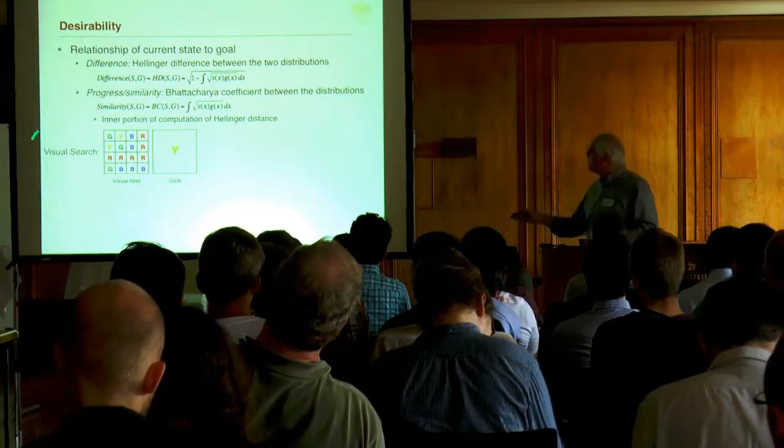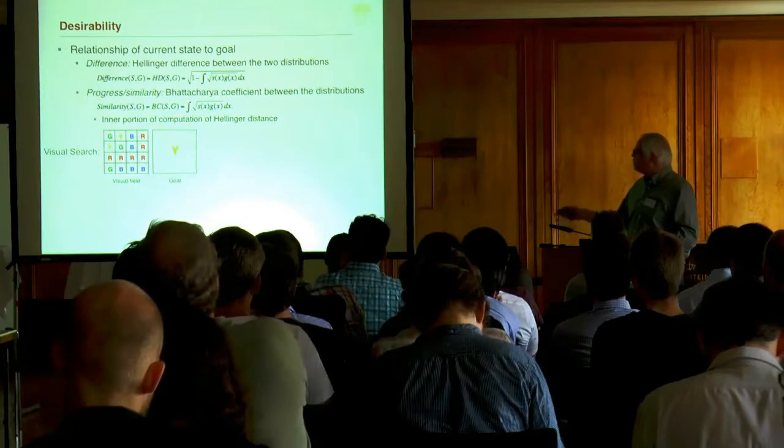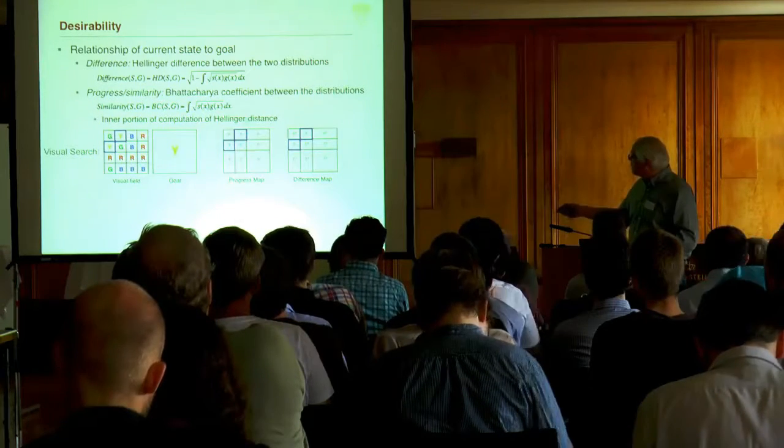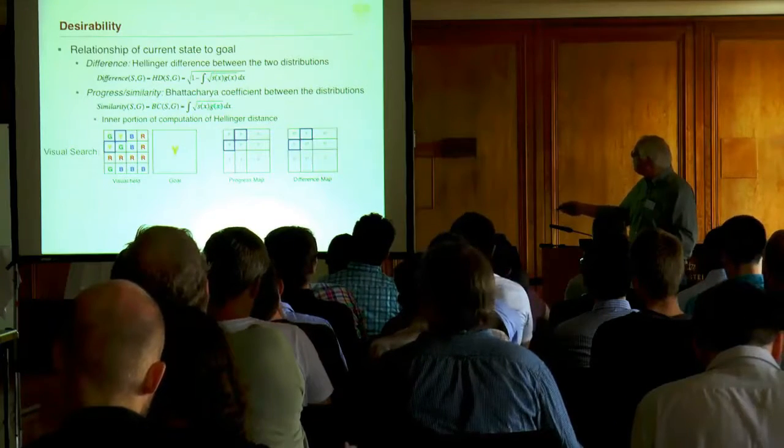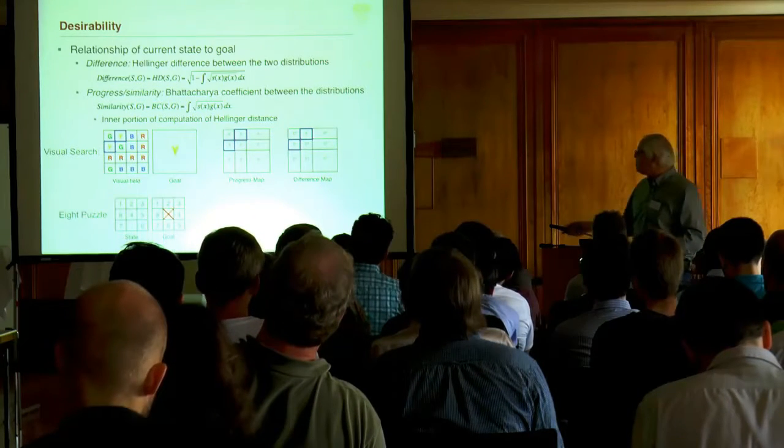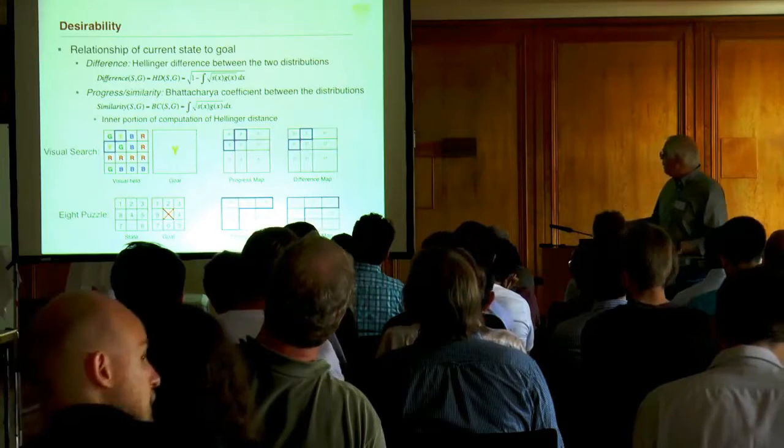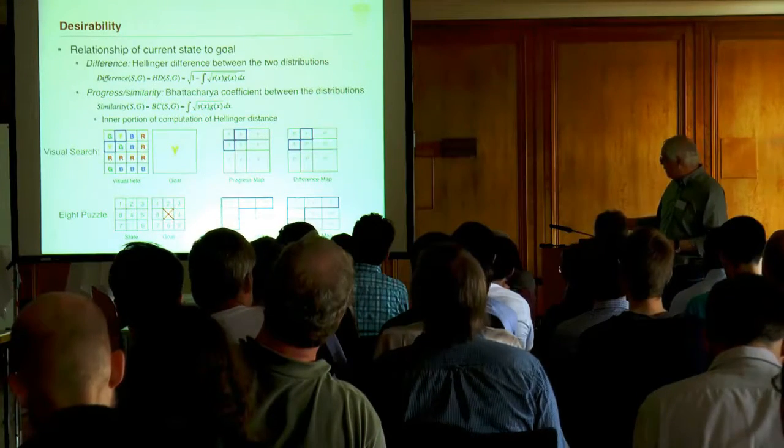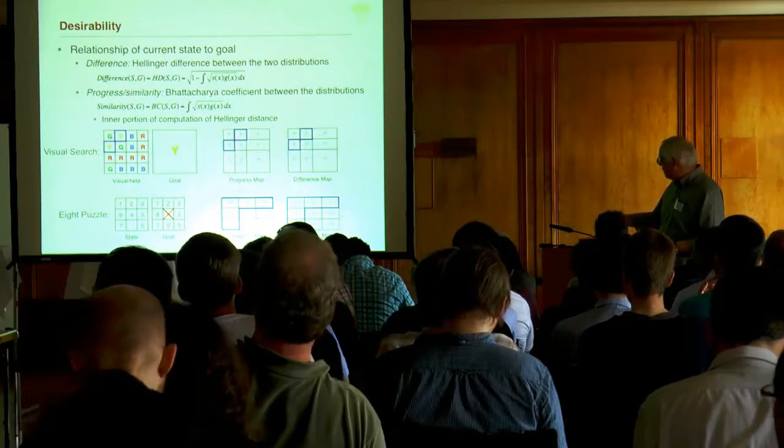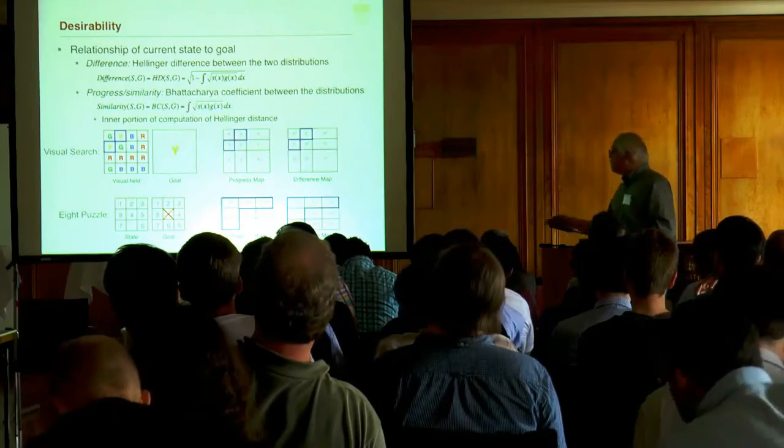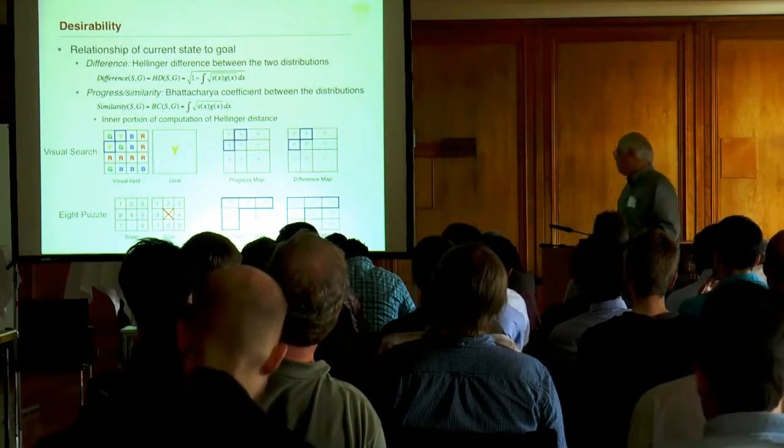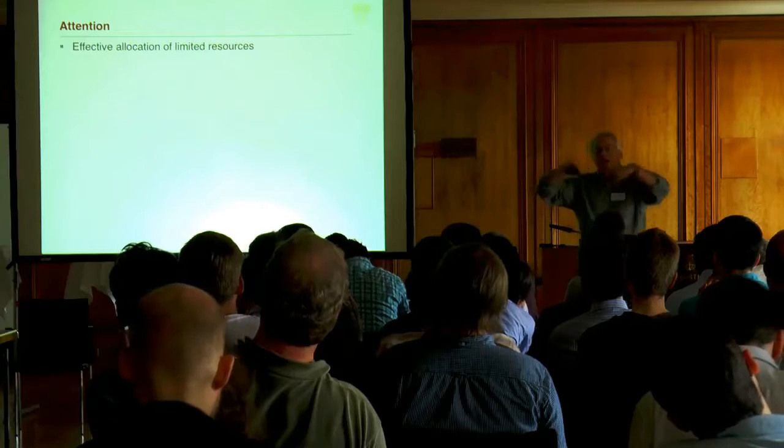Suppose we're doing visual search. Here we have that same image, now we're looking for yellow. So we have a goal of yellow everywhere in the image. That should pick out those two pieces with a progress map up here and a difference map there. You can do the same thing in the 8 puzzle with the state and the goal, where you've got a progress map which shows you the tiles in place and a difference map which highlights the parts that aren't in place. You can imagine using this in controlling search at the deliberative level. What I want to focus on is attention at the reactive level.